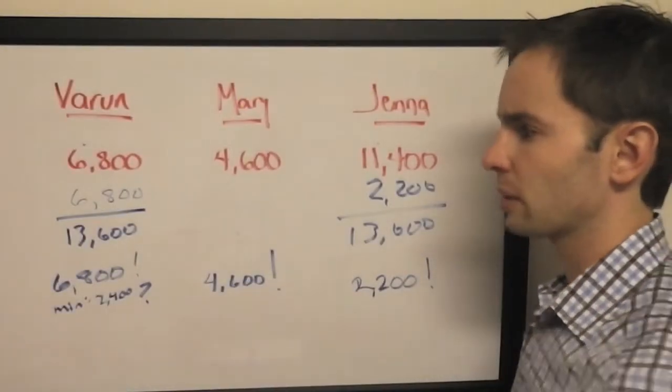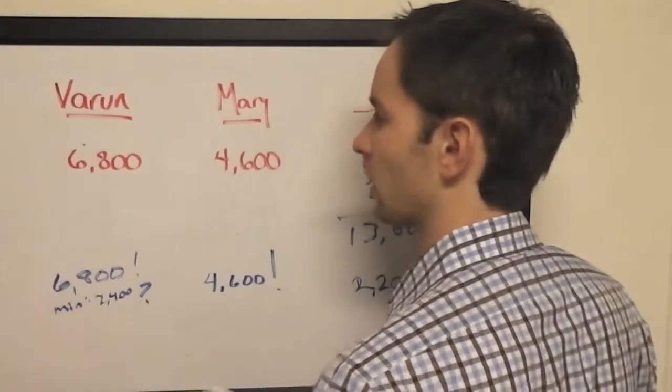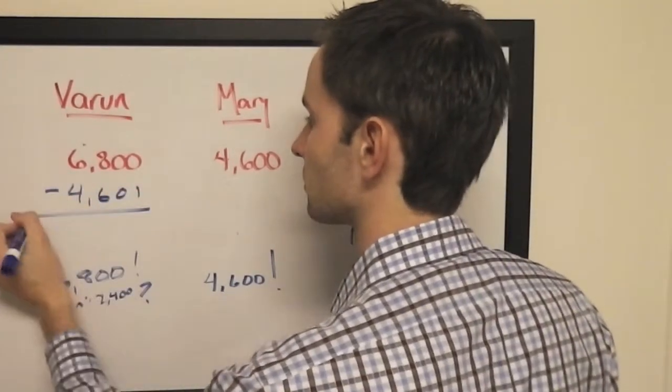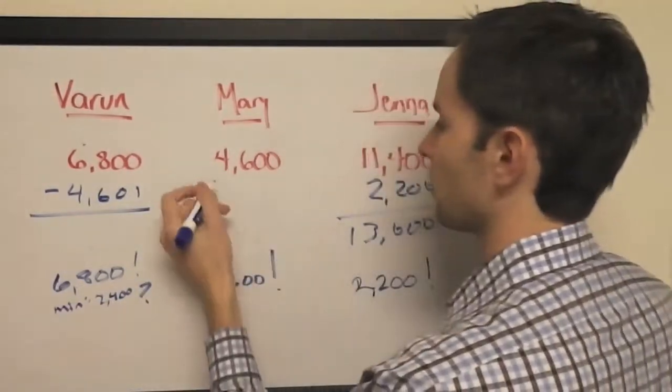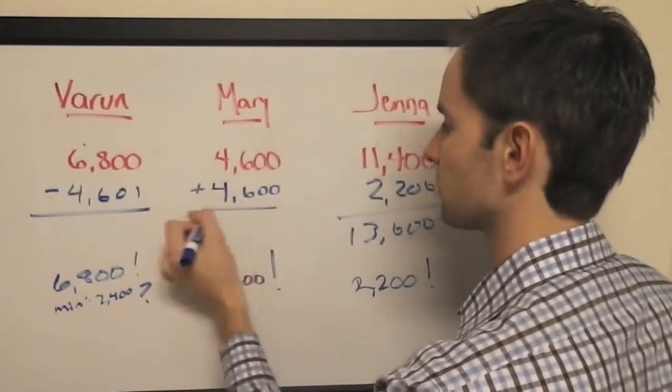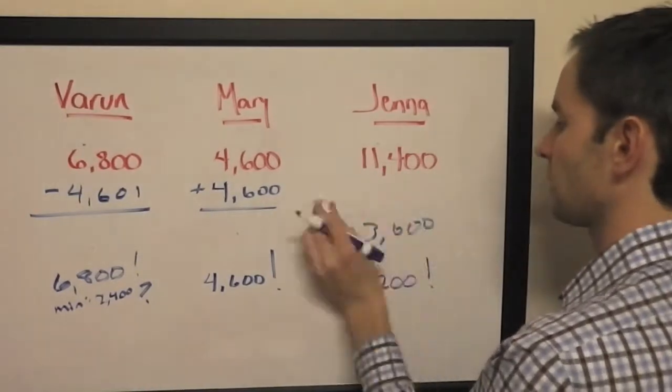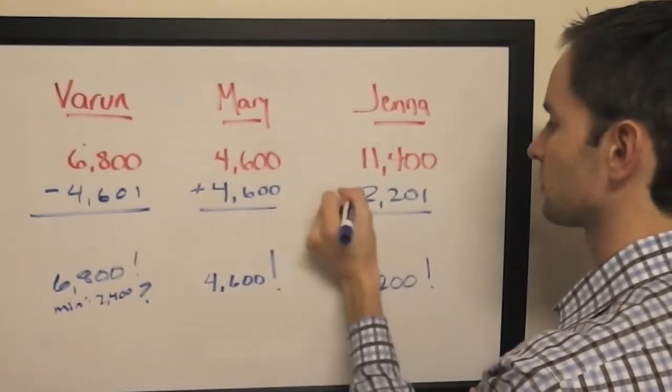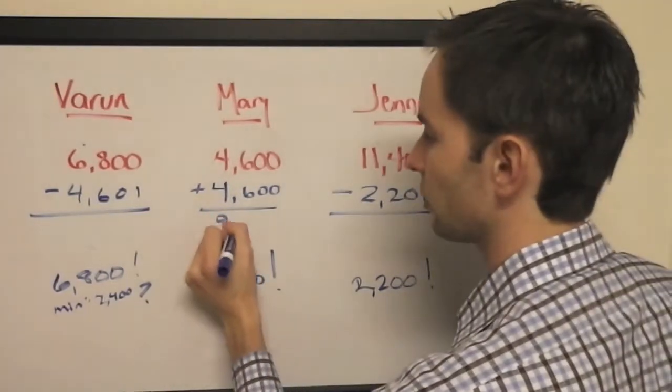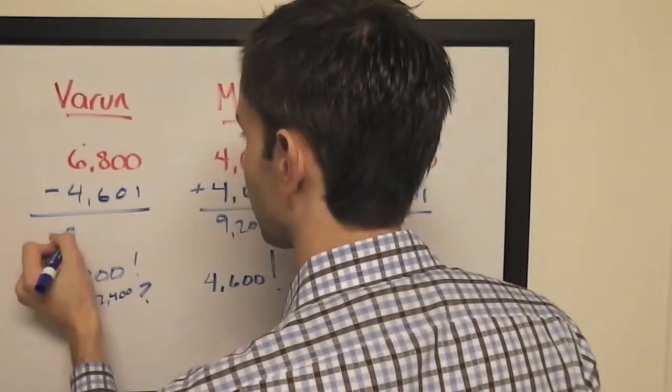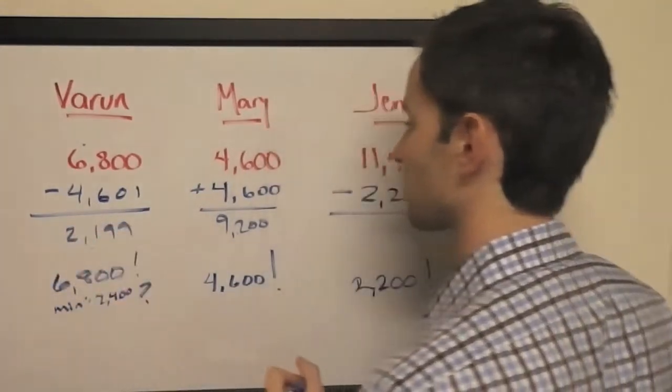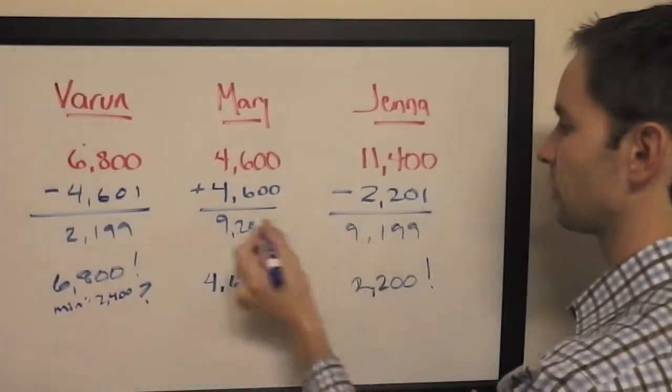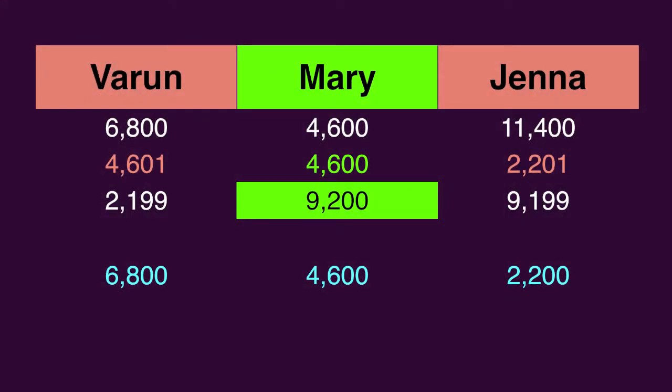But what would happen if Varun got it wrong, Mary got it right, and Jenna got it wrong? Well, you'd have Mary at $9,200, you'd have Varun at $2,199, and you'd have Jenna at $9,199, which loses to Mary by a dollar. Not worth the risk.